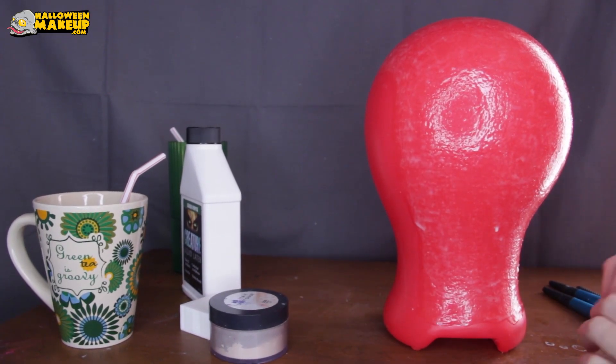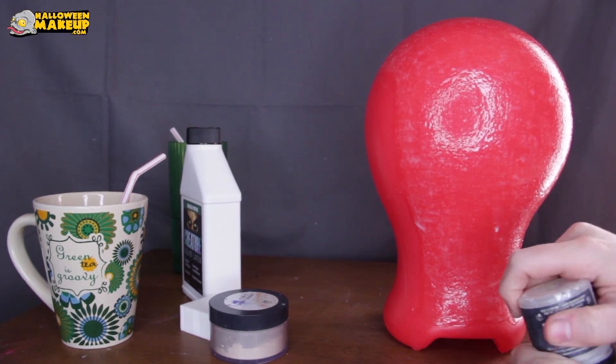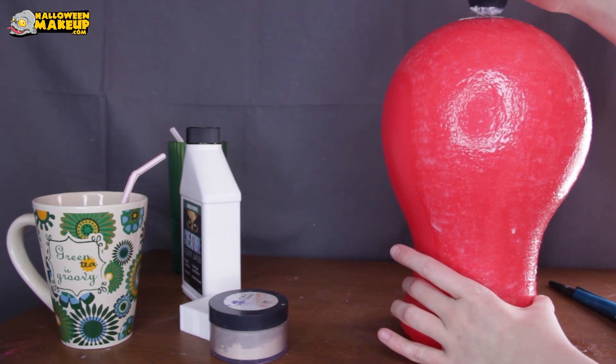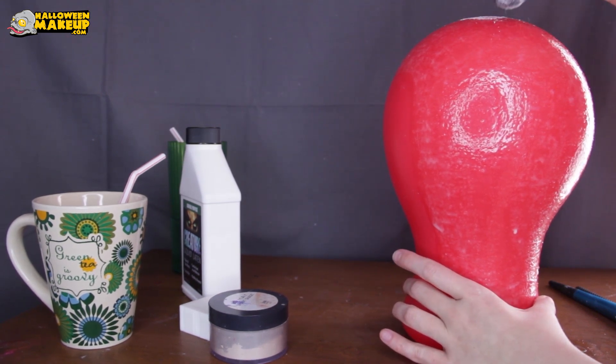So now I'm taking some translucent setting powder. This is my favorite powder in the entire world. This is the Mehran loose setting powder and a big fluffy brush and you just start going ham with that.